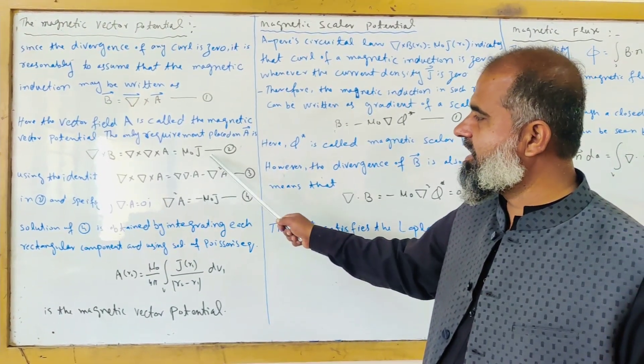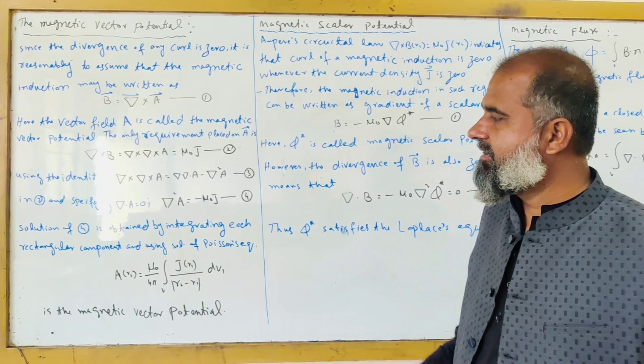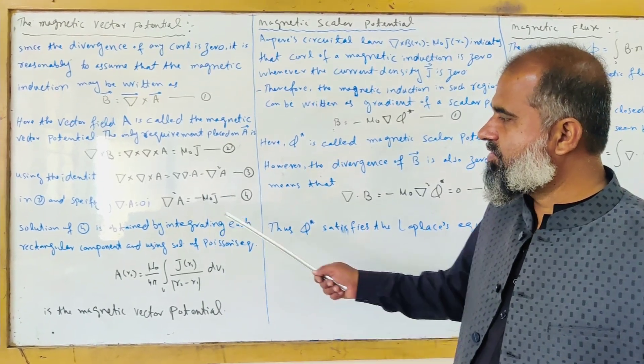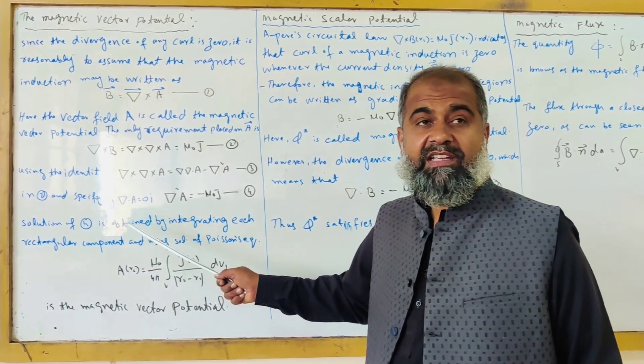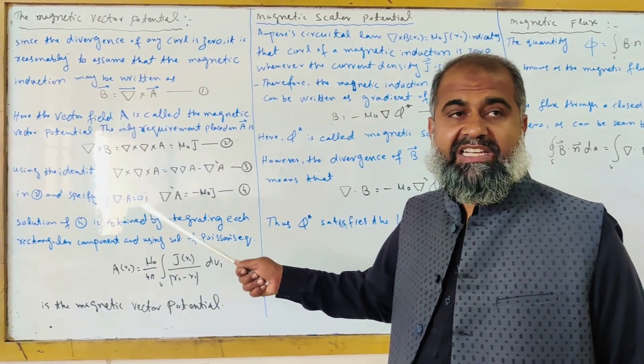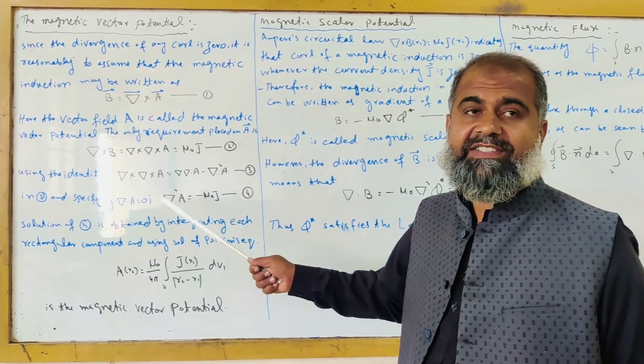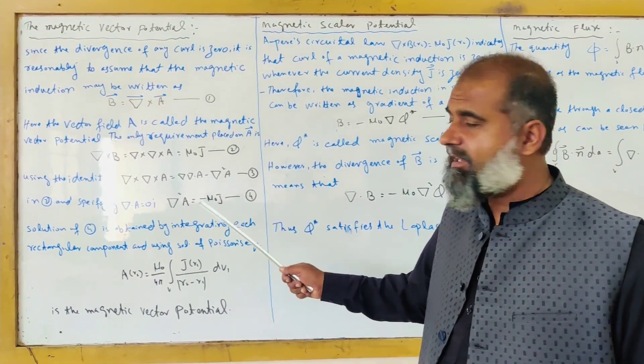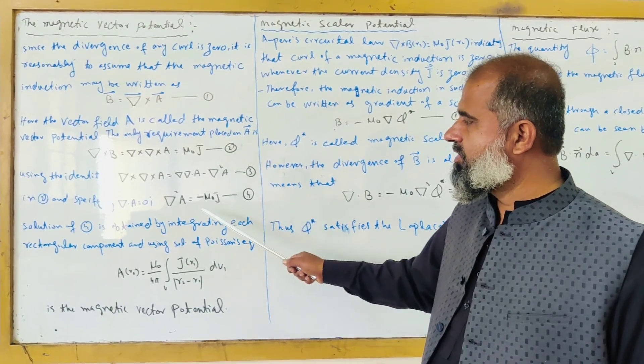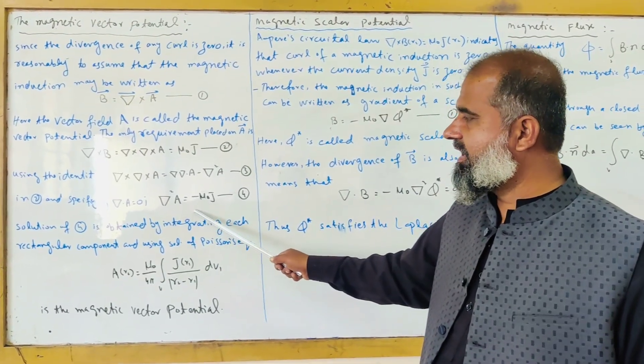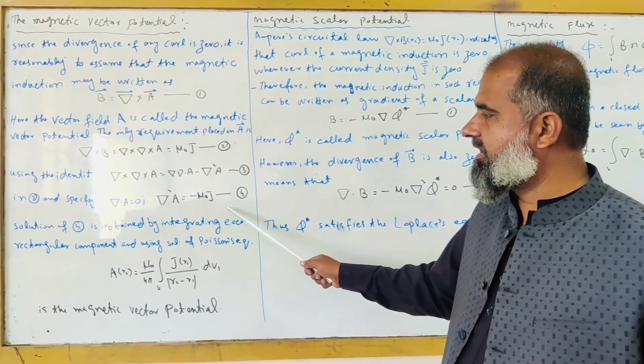We use this identity in equation 2 and specify that del dot A, the divergence of the magnetic vector potential, equals zero. By putting this identity in equation 2, we get del square A equals minus mu naught J.